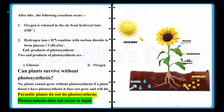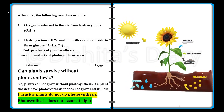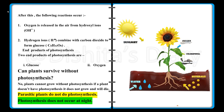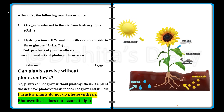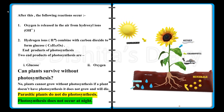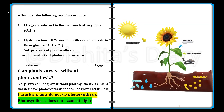After this, the following reactions occur: oxygen is released into the air from the hydroxyl ions (OH-). Hydrogen ions (H+) combine with carbon dioxide to form glucose — C6H12O6 is the chemical formula of glucose.